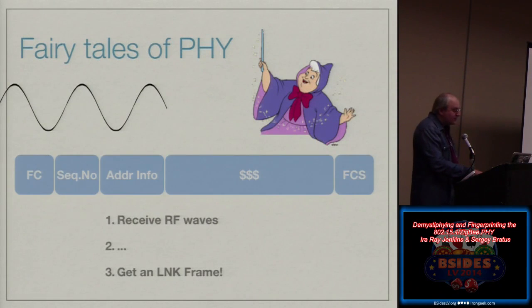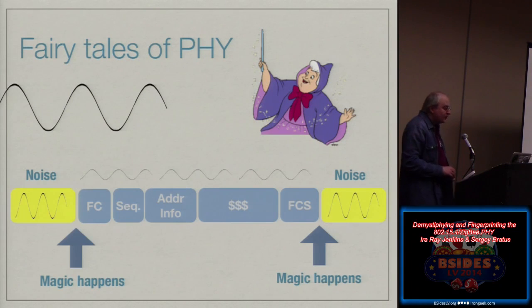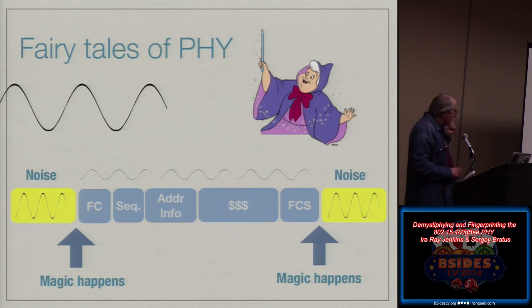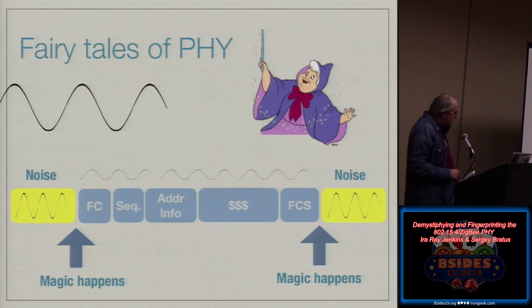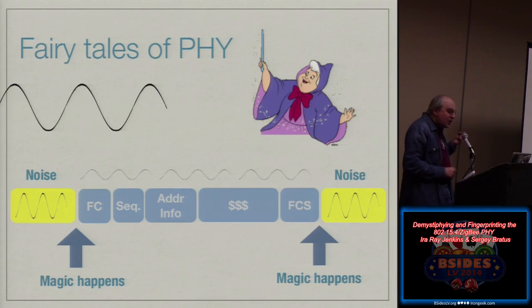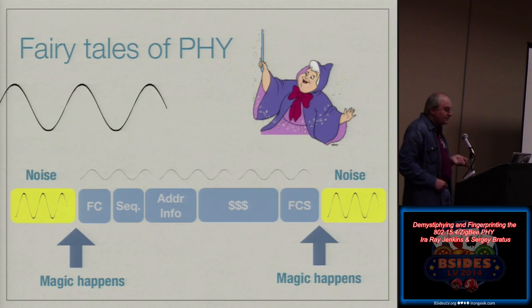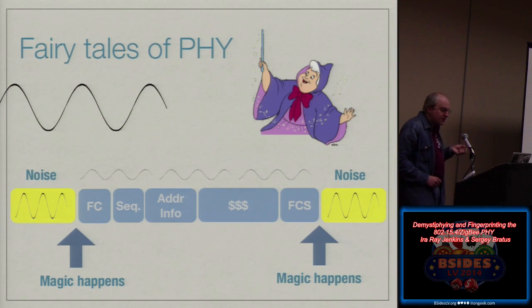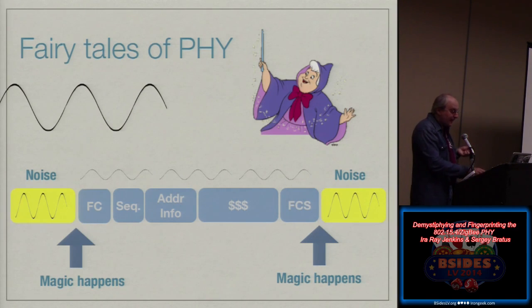Let's see how magical that magic is. What you get is noise — most of the time, what you get is noise. Then magic happens and this noise becomes the frame. Then magic has to happen again for the frame to end and for noise to begin. Your hardware has little automata baked into its silicon that do this magic. Those automata differ between chips. You can fingerprint different chips from different vendors by their responses, by those automata, by their differences.